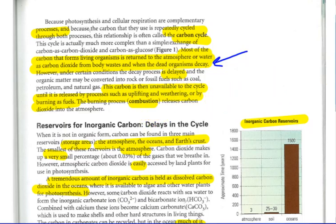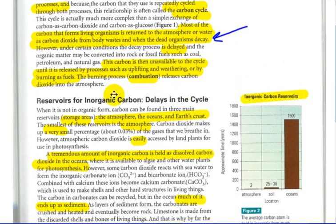So that carbon becomes trapped. We'll look at reservoirs or areas in which carbon can be trapped and it delays the cycle. So first of all, inorganic carbon, such as CO2, when it's not in its organic form, carbon can be found in three main areas, the atmosphere, oceans, and Earth's crust.